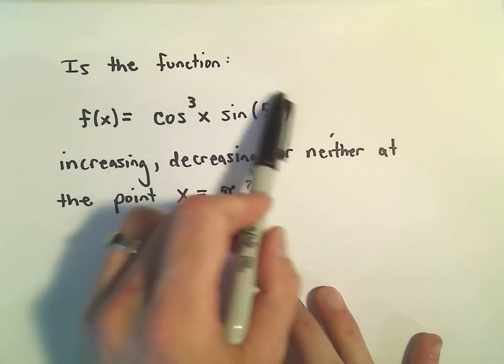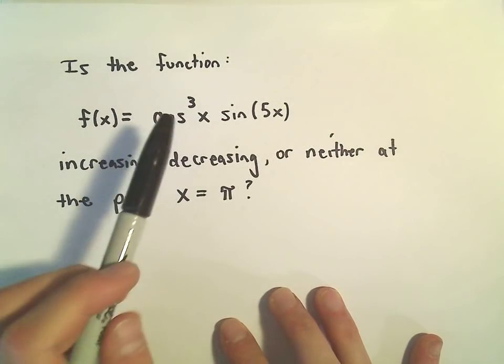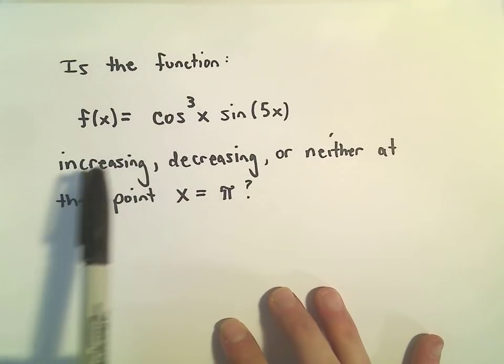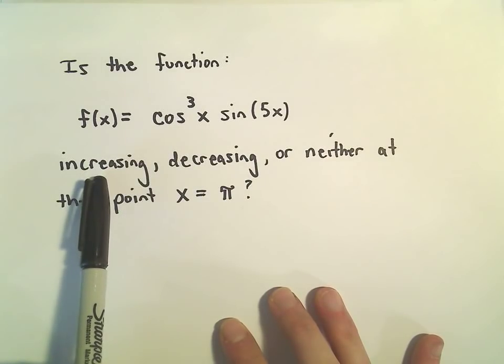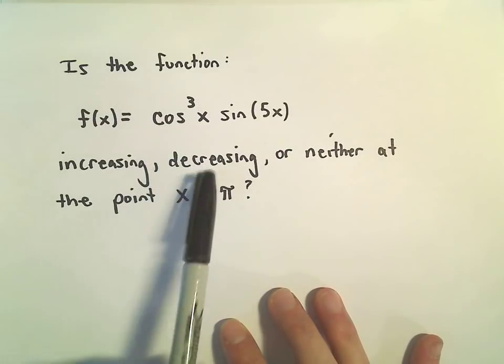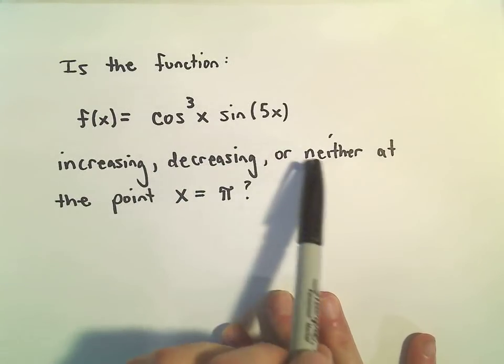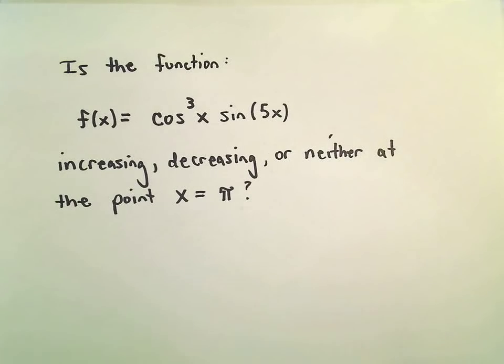So the idea is we're going to take the derivative of this function. If the derivative is positive, we'll say the function's increasing. If the derivative is negative, we'll say it's decreasing. And if the derivative equals zero, we would say it's neither.